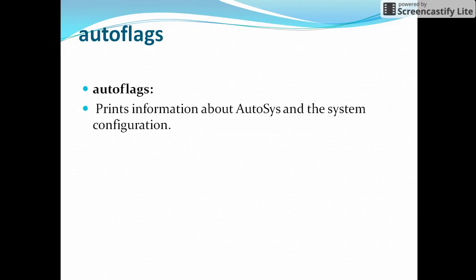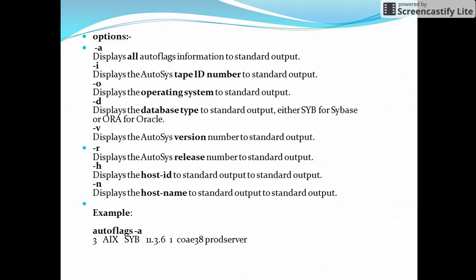The options are: if you use autoflag -a, it will display all the information to the standard output. Below is an example — autoflag -a — so it will display all the output. As in the example, it shows the AIX Sybase database with the version, host ID, and host server. All those details will be provided.